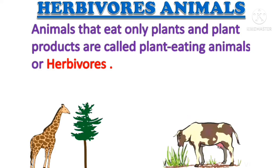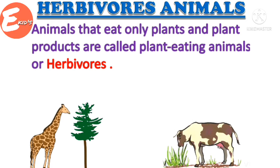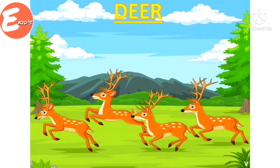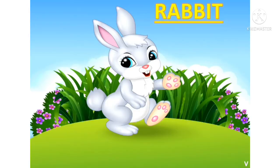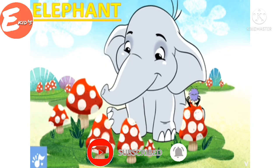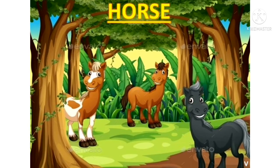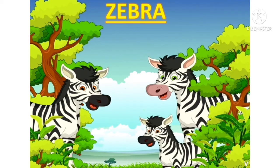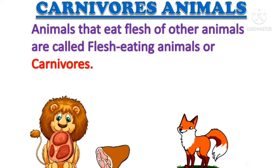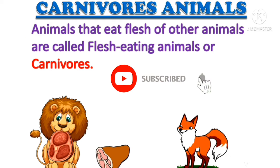Herbivores: animals that eat only plants and plant products are called plant-eating animals or herbivores. Examples of herbivores are deer, rabbit, elephant, sheep, horse, and zebra. Animals that eat flesh of other animals are called flesh-eating animals or carnivores.